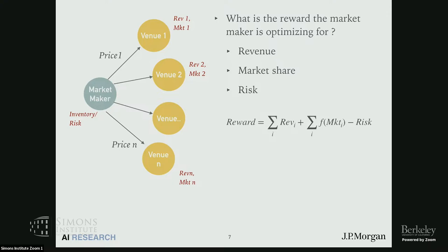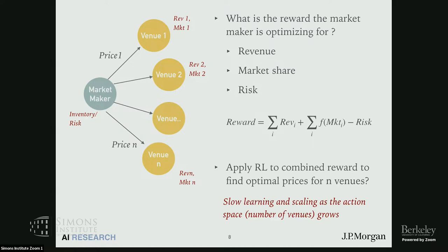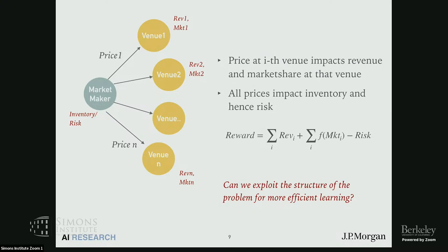So what is the market maker optimizing for? It is trying to maximize the revenue aggregated across these venues, optimize some function of the market share across these venues, and minimize risk. These kinds of multi-objective reward functions are actually very common in our domain — it is almost the norm, since there's rarely an occasion where a business only cares about one thing. If you apply RL to this combined reward to find optimal prices for these venues, the learning is very slow and scales very poorly as the action space — the number of venues — grows. There is a fair amount of structure in this problem because the revenues and market share at a particular venue depend on the prices streamed to that venue, but are conditionally independent of the other prices. However, all prices impact the inventory and hence the risk. The question is whether we can exploit this structure for more efficient learning, not just for this problem but for a more general class of problems.